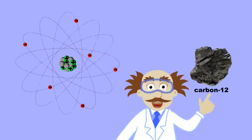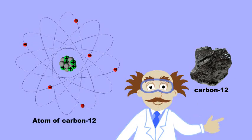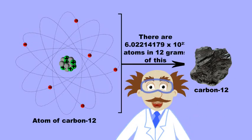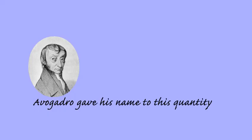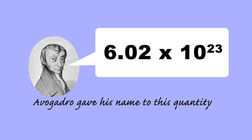In 12 grams of carbon, each atom has a role, defining the number of particles in a mole. Avogadro gave his name to this quantity: 6.02 times 10 to the power of 23.